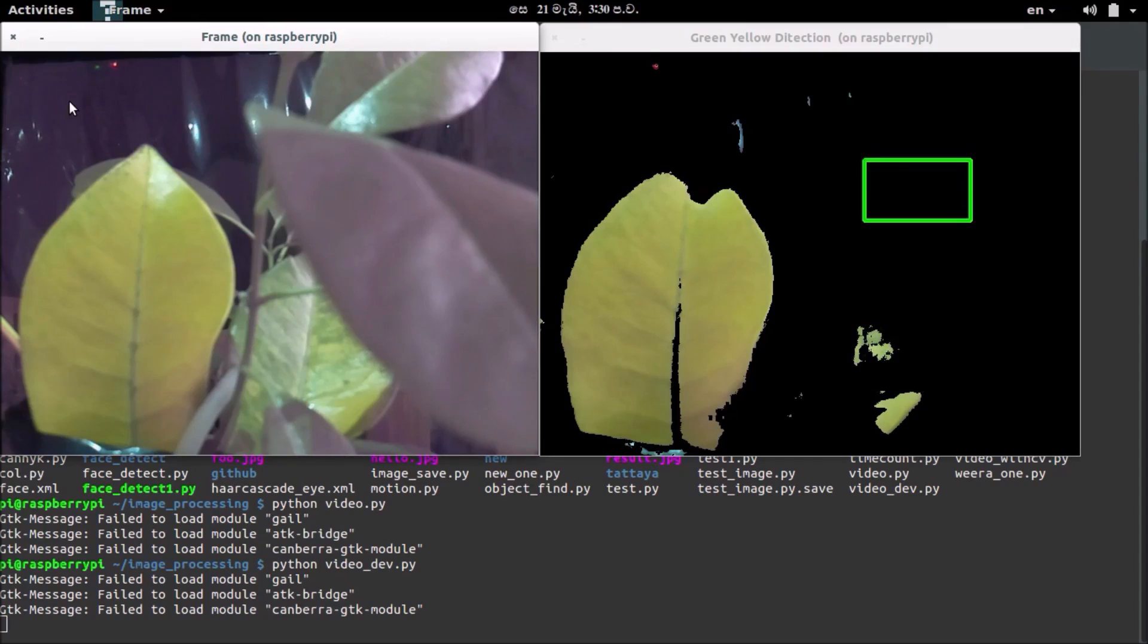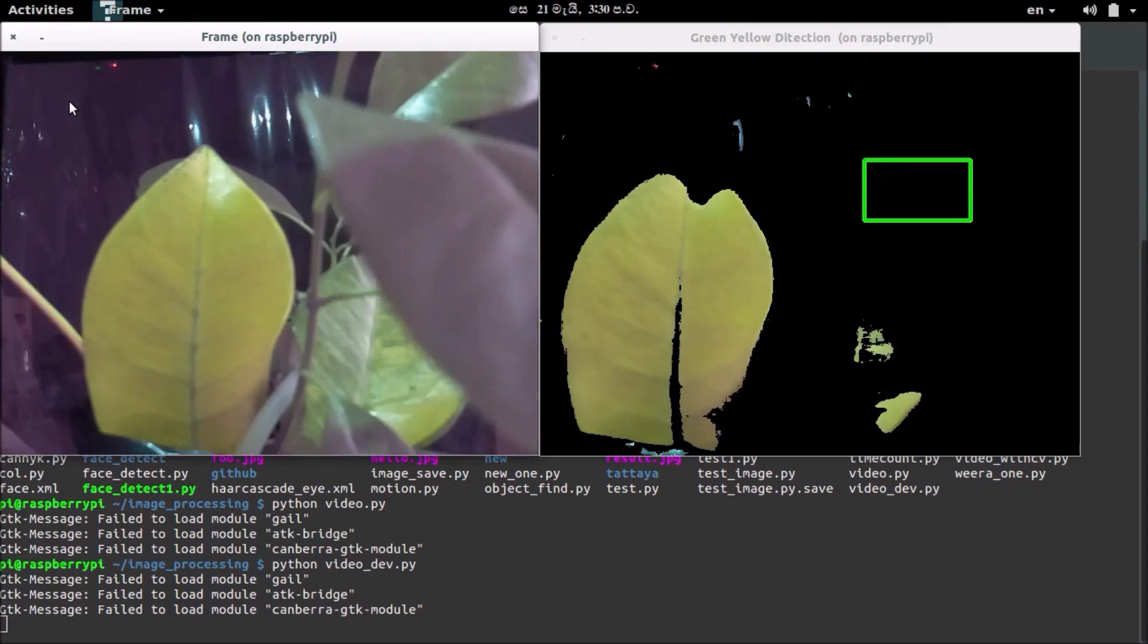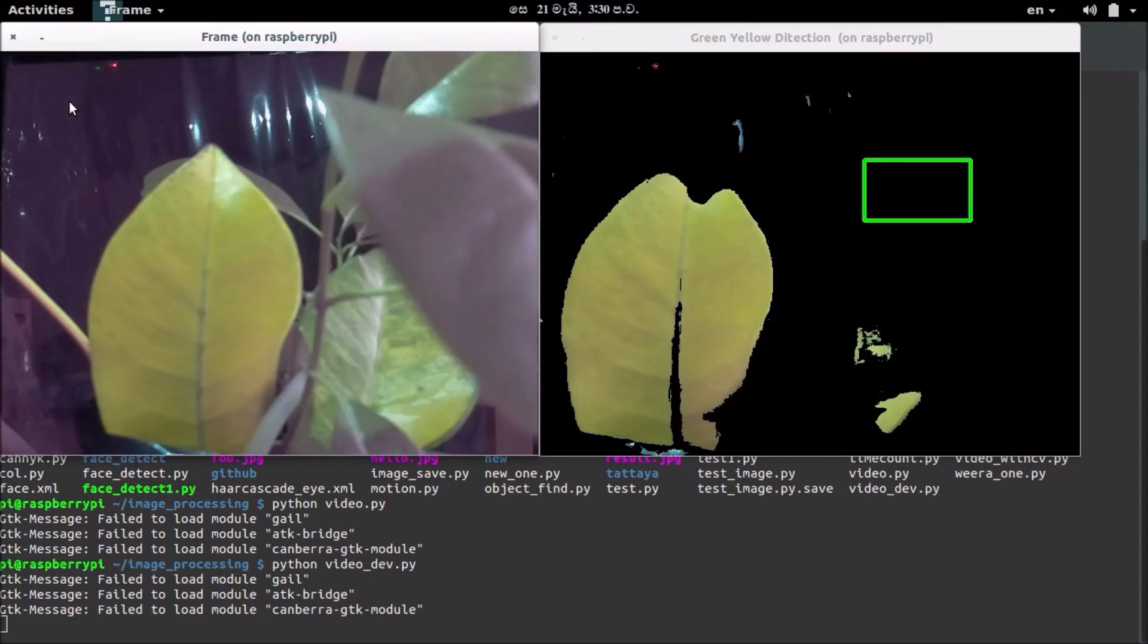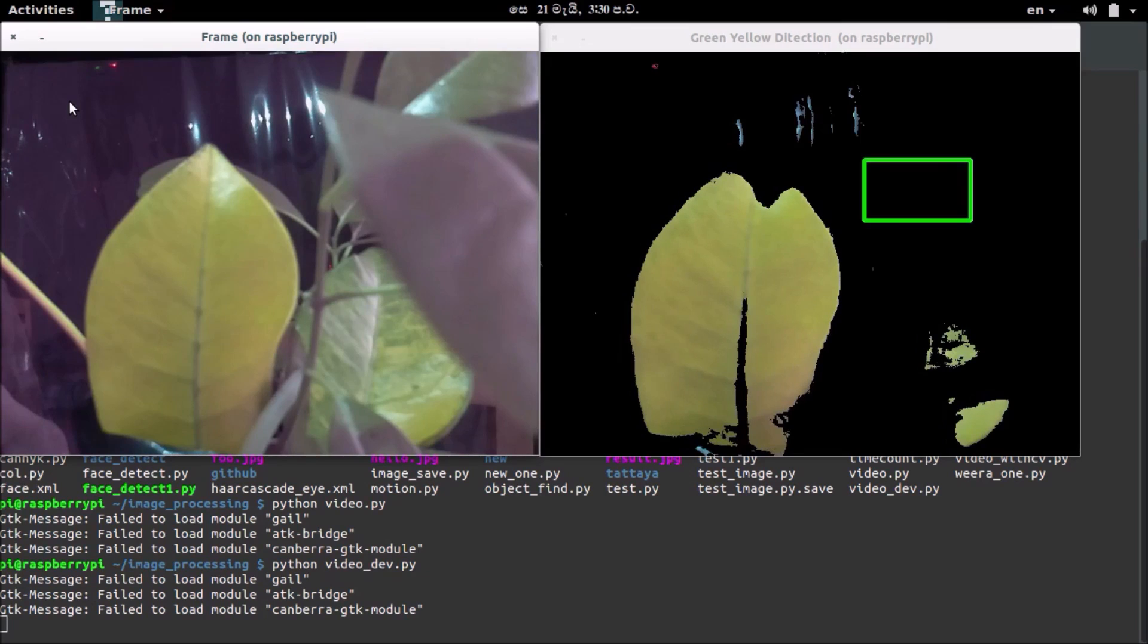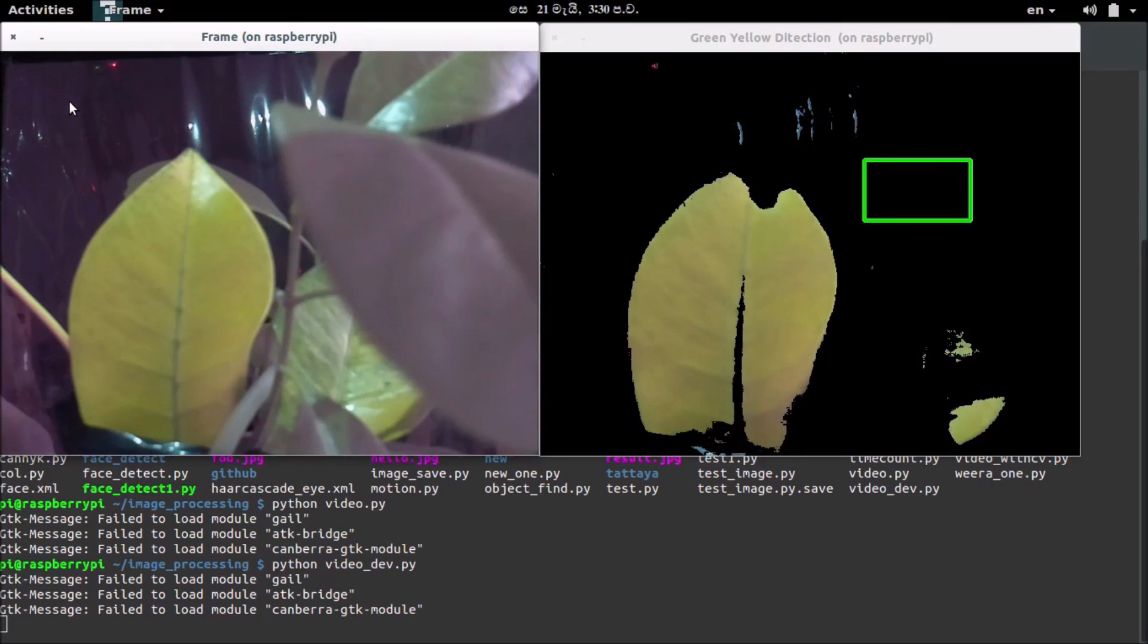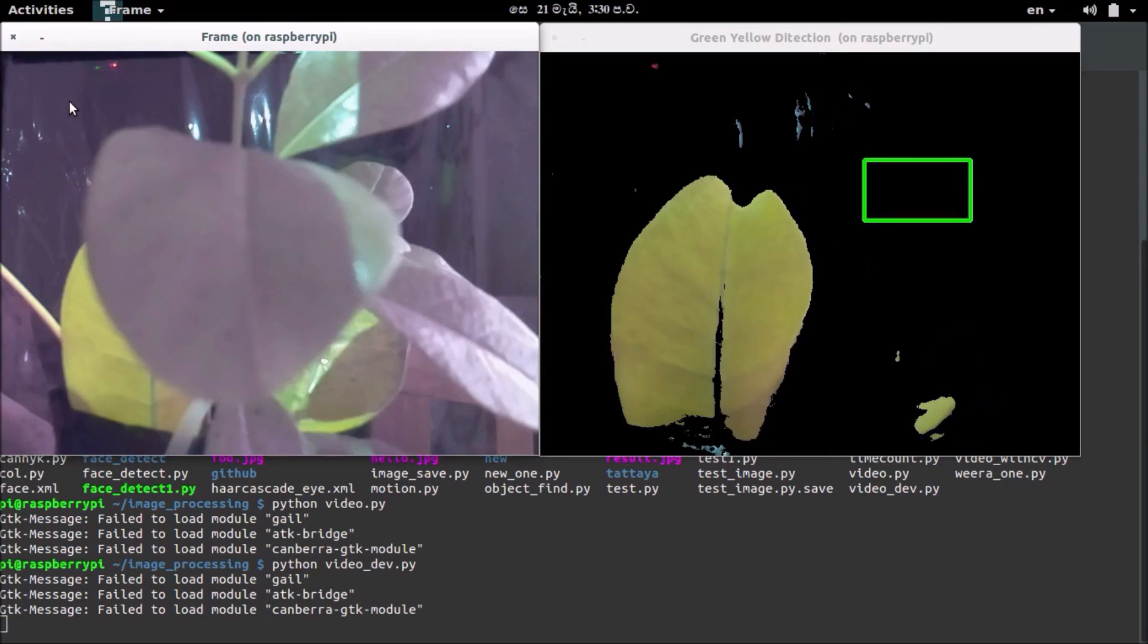Here this PC is connected to the Raspberry Pi and can view the image. For now we have developed the ability to detect yellow patches of the leaf. Here you can see on the left side window it's only detecting yellow patches of the leaf.